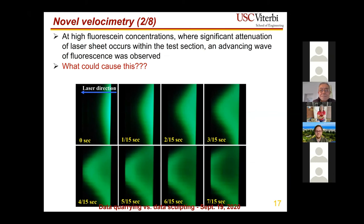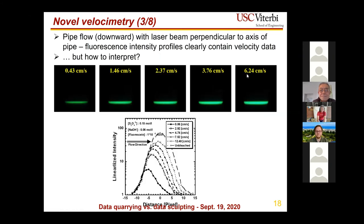This is another case where the data was screaming something but it took a long time to figure out what it was trying to tell. The third example — edge flames in combustion — was prepared but skipped due to time. Very unusual results were found where methane behaved one way, higher hydrocarbons behaved completely differently, and even n-butane versus isobutane showed entirely different behavior. There's a lot of meaning inside, but we'll move to the concluding slide.